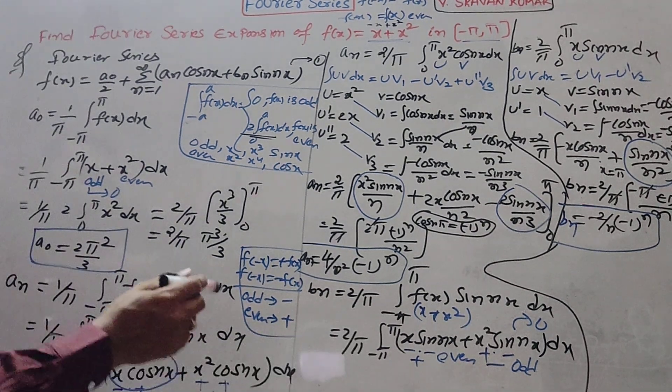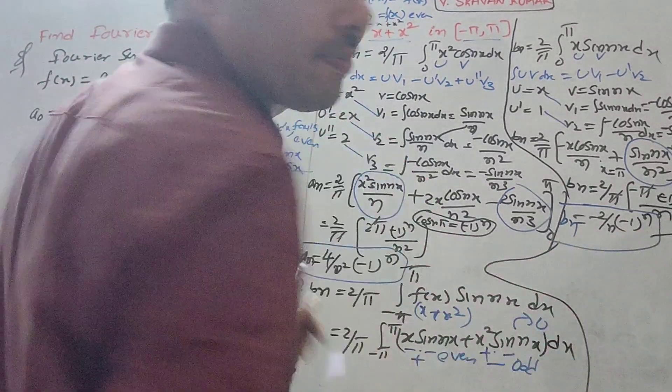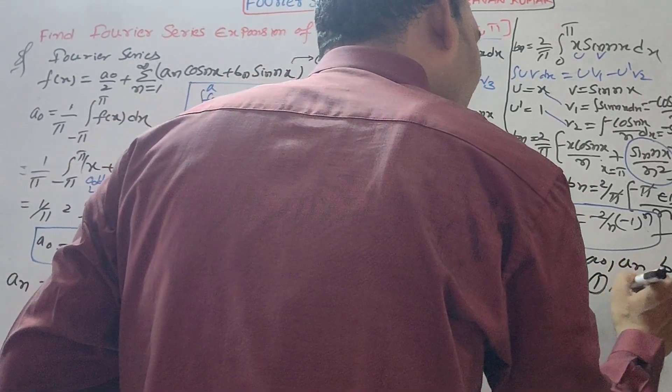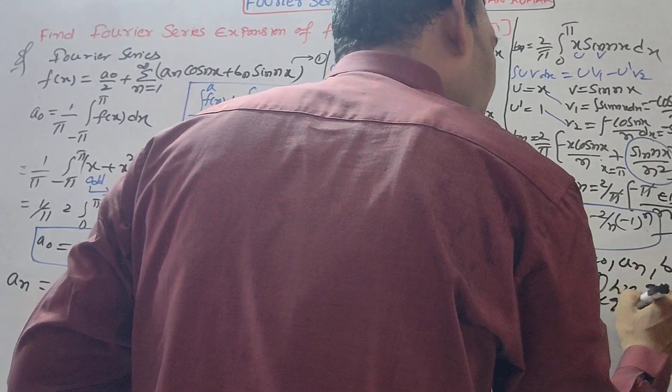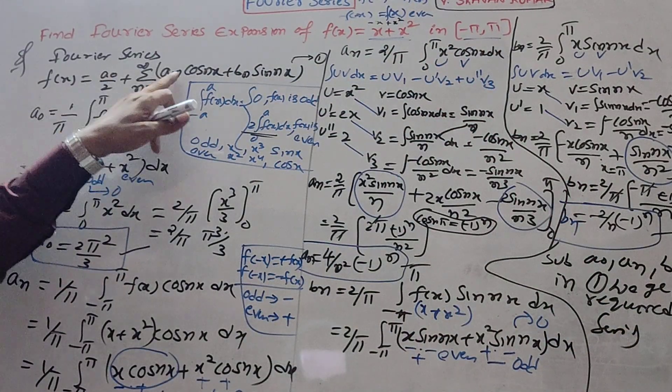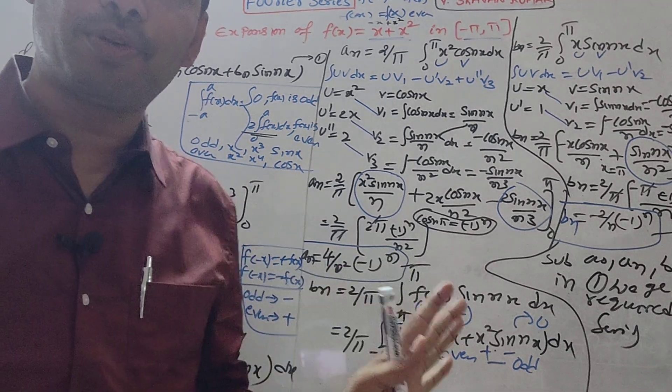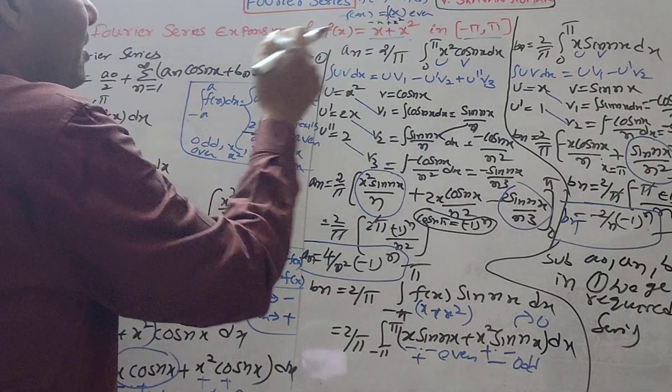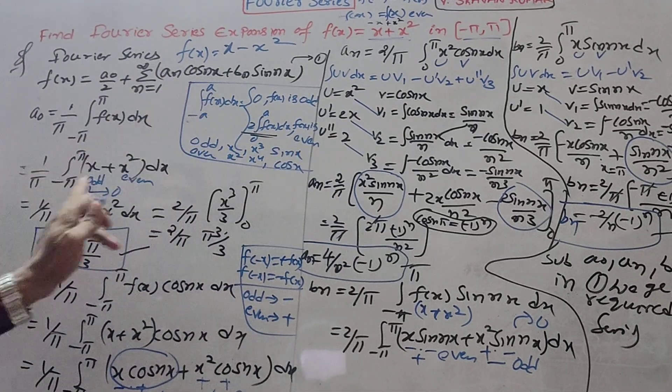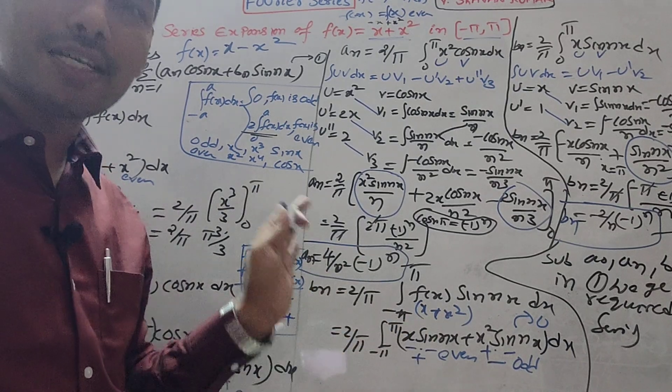Now substituting a₀, aₙ, and bₙ in equation 1, we get the required Fourier series. a₀ = 2π²/3, aₙ = 4/n²(-1)ⁿ, bₙ = -2/n(-1)ⁿ. This is a very important problem. Similarly, you can solve x - x² on the same interval. This sum and that sum are related.